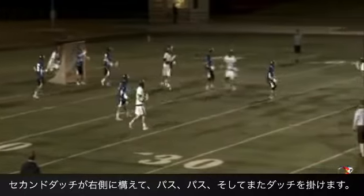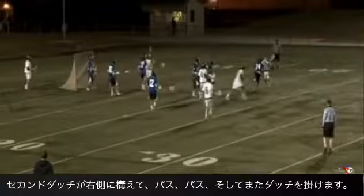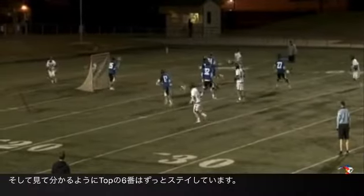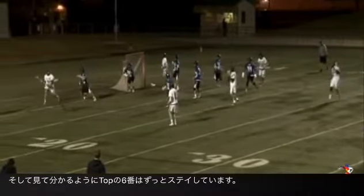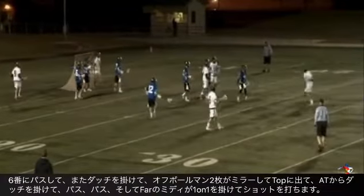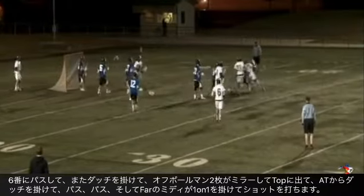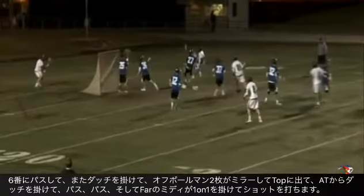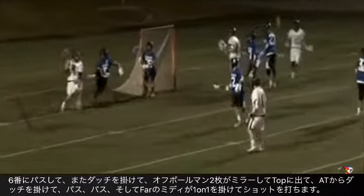Pass, pass, another dodge and reset. Now what you'll notice is that this player number six who's backside he's going to stay in this position the whole time. Pass forward to number six. Another dodge. Now he's dodging down the alley. The two other players up top are mirroring staying inside. Another dodge from the attackman.